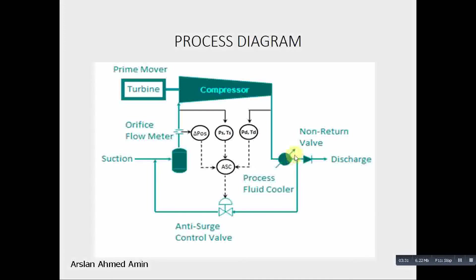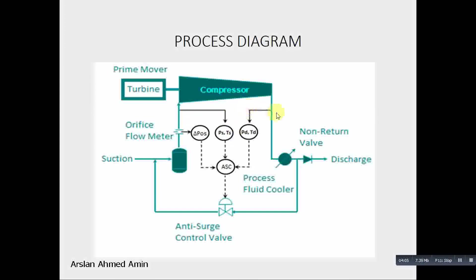Another strategy is blowing off: if there is high pressure buildup in the system, we can blow it off, but this would cause waste of expensive gas. So the smart technique is recycling. This is the anti-surge controller. Its inputs are the differential pressure — which gives us the flow — suction pressure, suction temperature, discharge pressure, and discharge temperature: five sensors in total. From these, the controller builds up the compressor map, then performs calculations and gives its output according to the control algorithm, which we will discuss further.